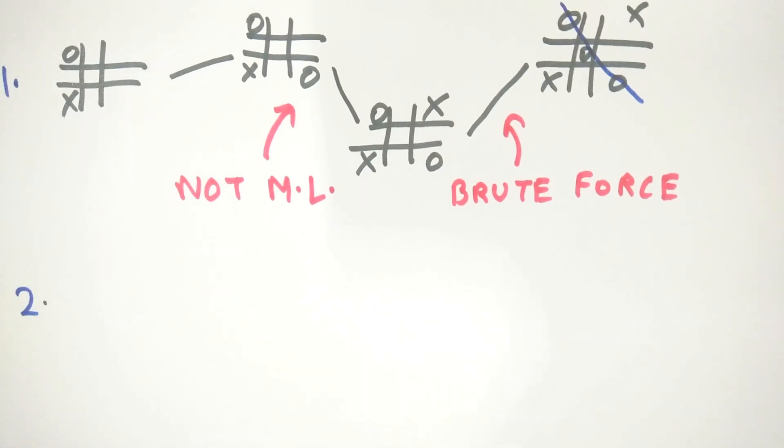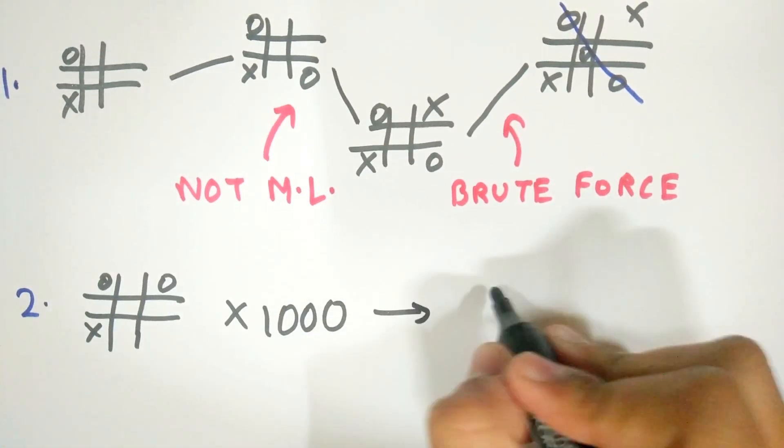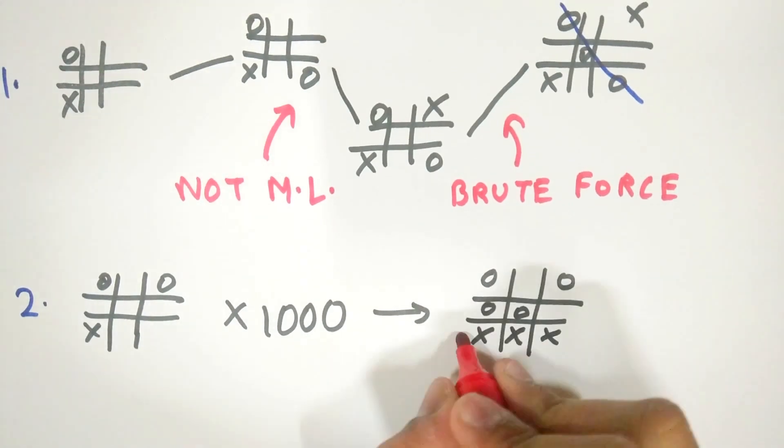A software that knows what the legal moves are and plays the game thousands of times to get efficient at the game is a machine learning software.